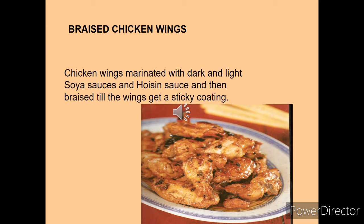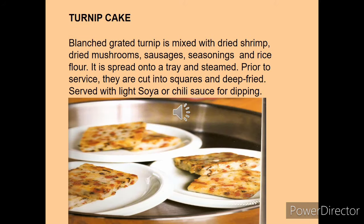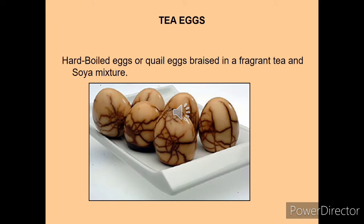Braised chicken wings are marinated with soy sauce and hoisin sauce, then braised until the wings get a sticky coating. Chinese people also enjoy turnip cake — grated turnip is mixed with shrimp, mushroom, sausage, seasoning and rice flour, then steamed. Before serving, it is cut into squares, deep fried, and generally served with soy or chili sauce as a dipping.